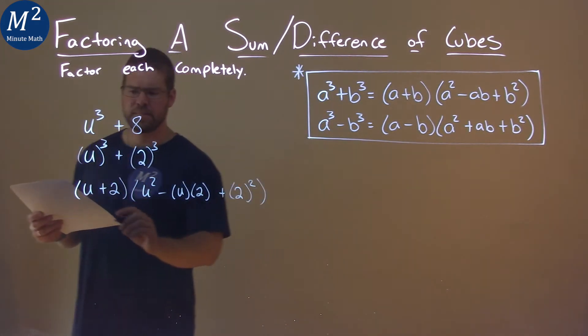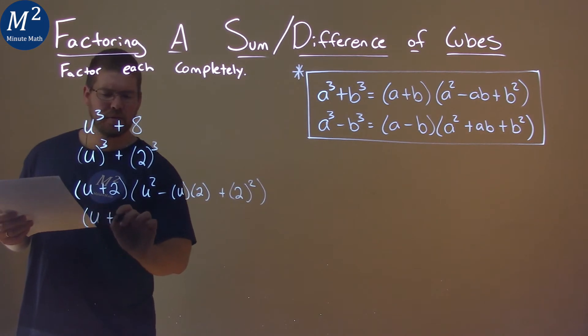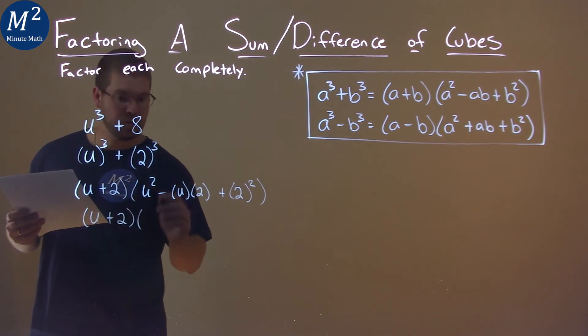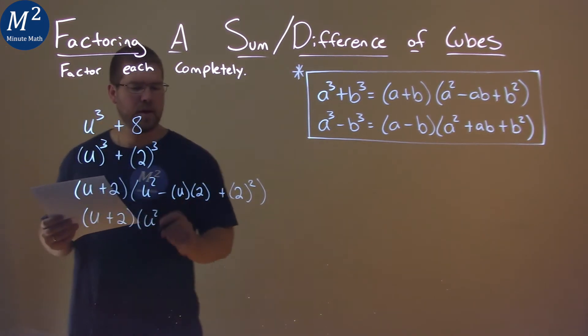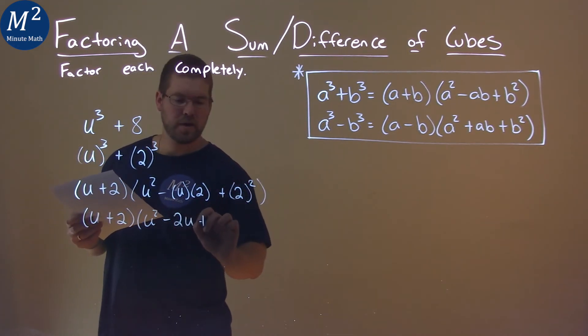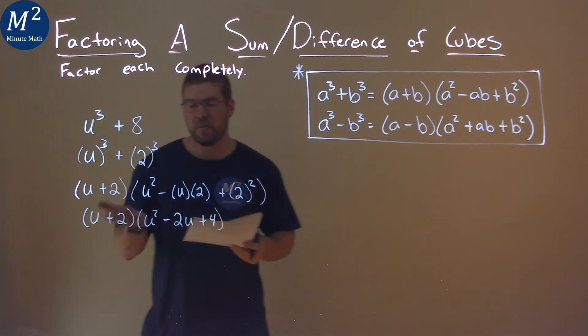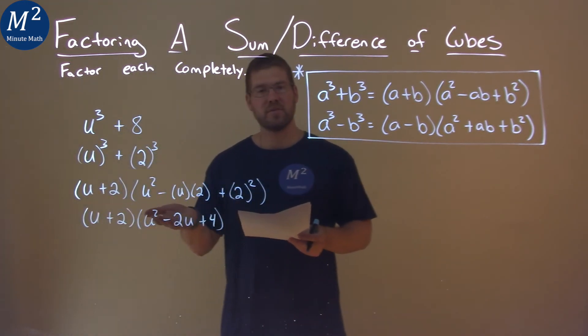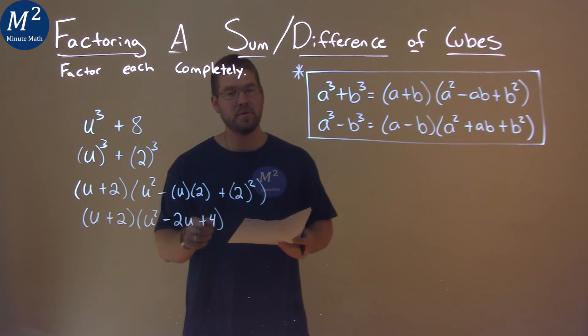Now we can simplify this again. u plus 2 times u squared again, but then instead of minus u2, it would be minus 2u. 2 squared is 4, and so our final answer is u plus 2 times u squared minus 2u plus 4.